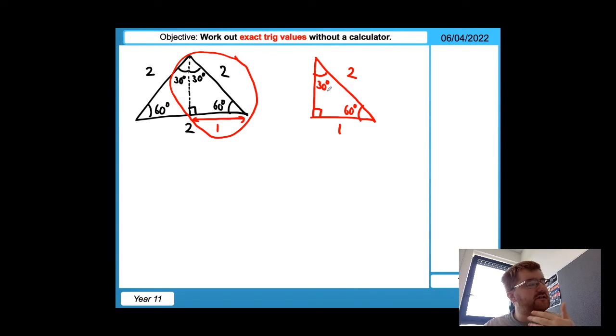And by using Pythagoras in a very similar way to the first triangle, we can work out the missing value. So x squared here is going to be equal to two squared minus one squared because we're looking for a smaller side. And so x squared is equal to four minus one, which is equal to three. And if we square root both sides, we then work out that this missing side is equal to the square root of three.